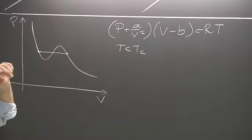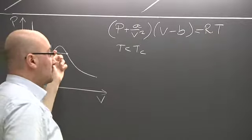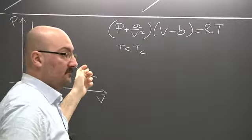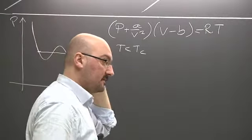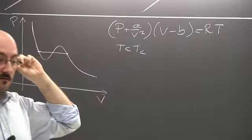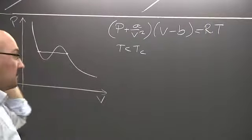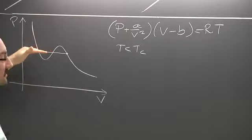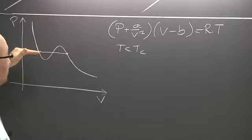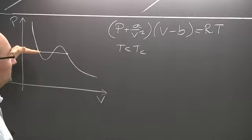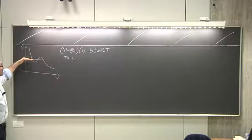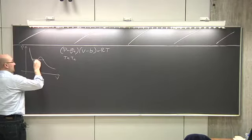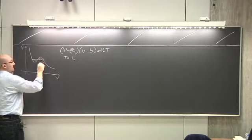Based on the second law, which implies that for an isothermal cycle the work done and heat exchanged are zero, we established Maxwell's construction, which tells us where to put this straight line. The straight line has to be placed so that the area under the curve here and the area above this curve here are equal.